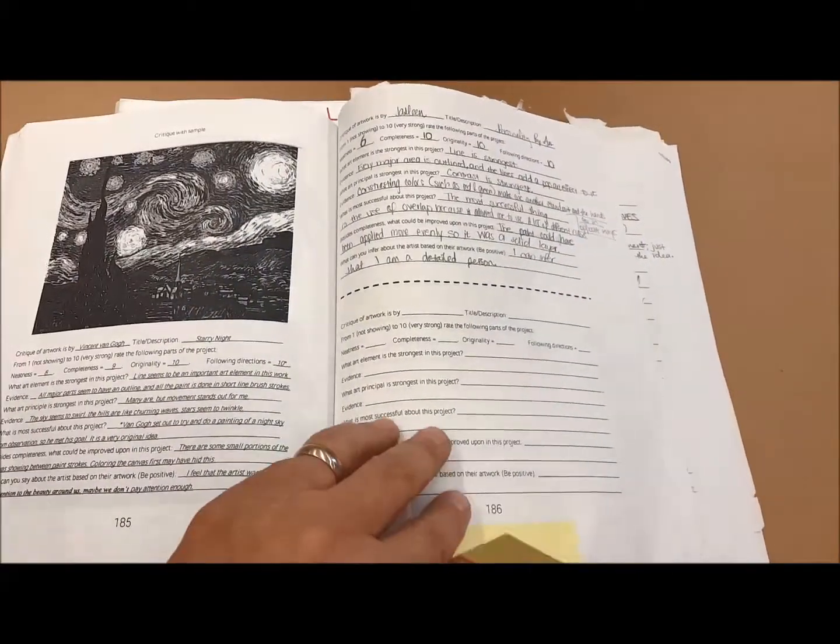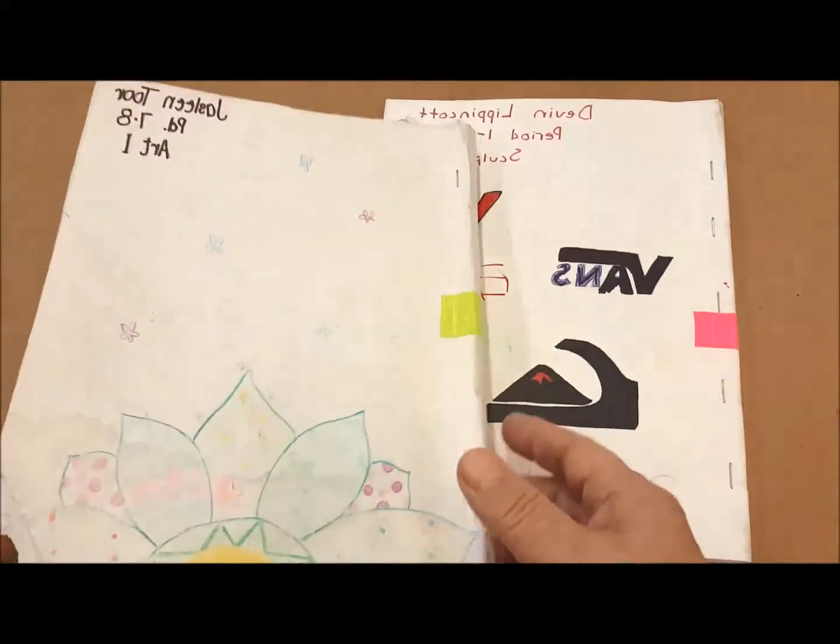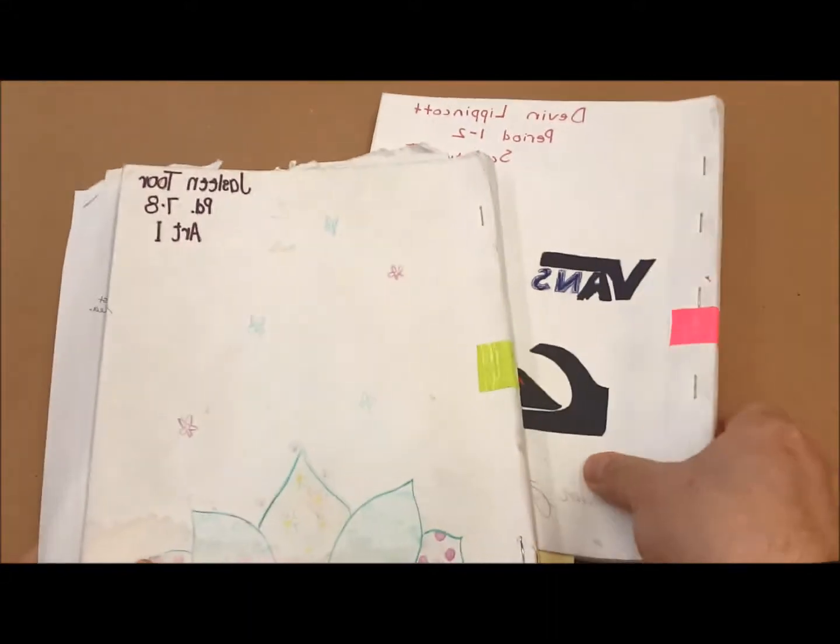We have critiquing pages in the back of the book. So this is a really great way to keep the year organized. But the books are designed to actually last about three years or for several courses.